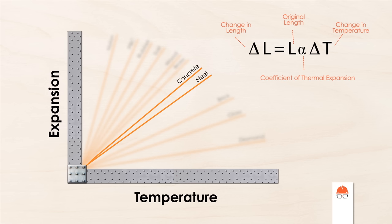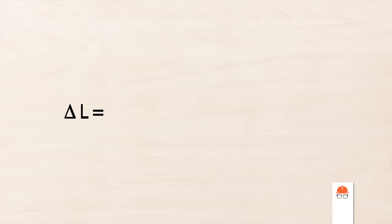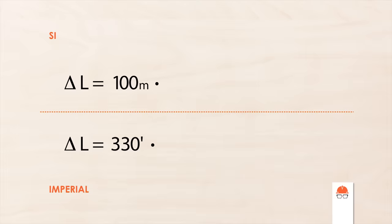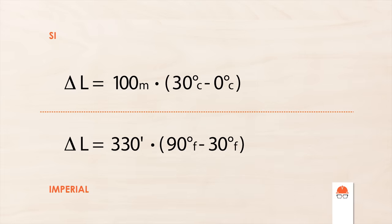A perfect example of this is a sidewalk. Let's look back at our formula and plug in some numbers for a very typical situation. If we enter values for the average length of a city block, the average high and low temperatures in a given year, and the thermal expansion coefficient for concrete, we can see the total movement of a sidewalk over the course of a year can be upwards of 4 centimeters, or 1.5 inches.